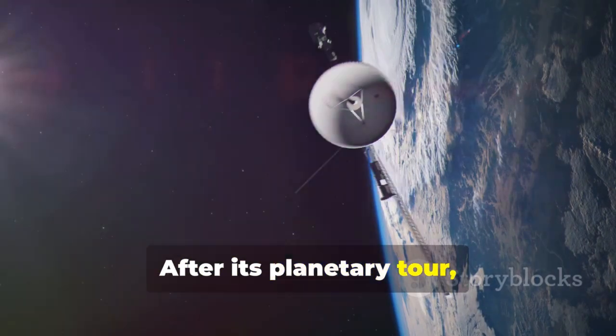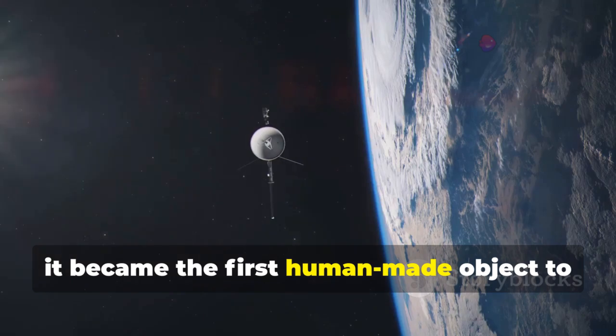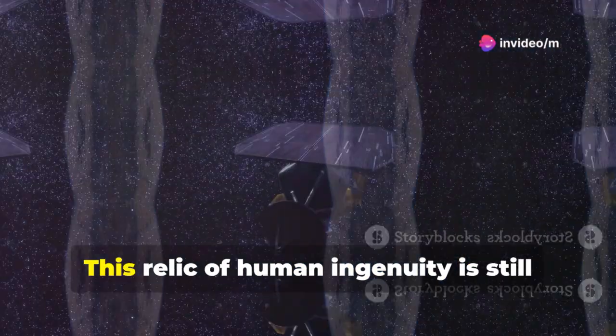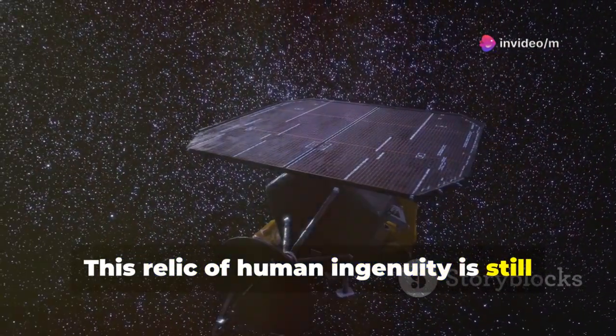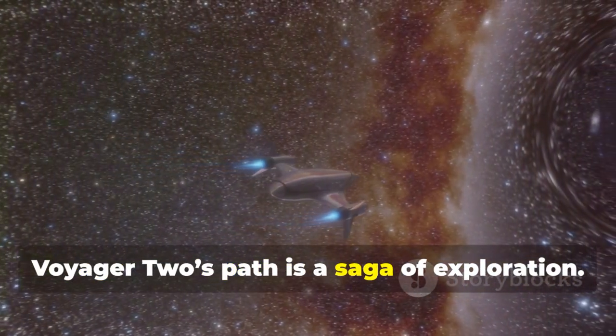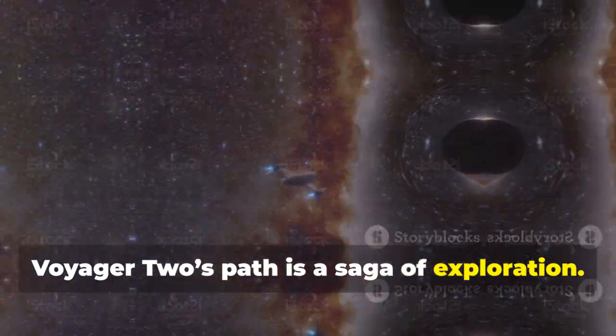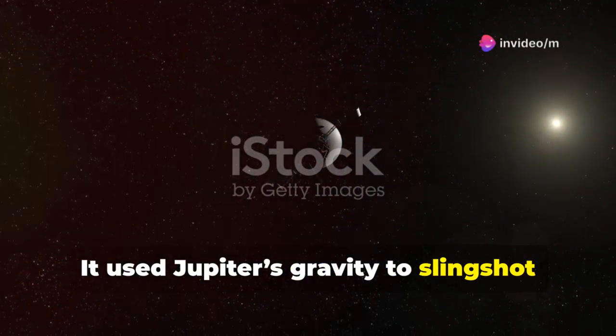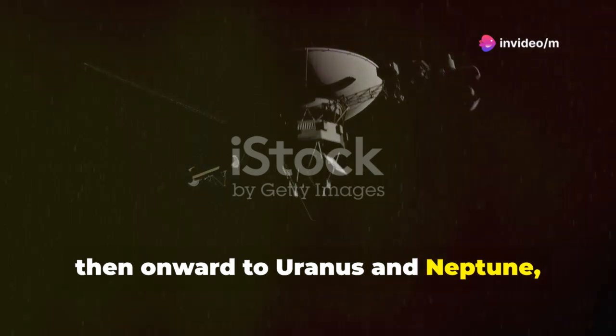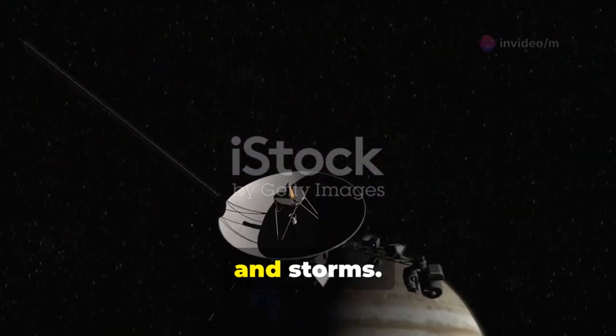After its planetary tour, it became the first human-made object to enter interstellar space in 2018. This relic of human ingenuity is still sending us data from the edge of the unknown. Voyager 2's path is a saga of exploration. It used Jupiter's gravity to slingshot towards Saturn, then onward to Uranus and Neptune, revealing new moons, rings, and storms.